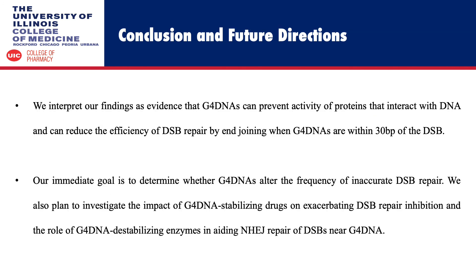We interpret our findings as evidence that G4 DNAs can prevent activity of proteins that interact with DNA and can reduce the efficiency of double strand break repair by end joining when G4 DNAs are within 30 base pairs of the double strand break. Our immediate goal is to determine whether G4 DNAs alter the frequency of inaccurate double strand break repair. We also plan to investigate the impact of G4 DNA-stabilizing drugs on exacerbating double strand break repair inhibition and the role of G4 DNA-destabilizing enzymes in aiding end joining repair of double strand breaks near G4 DNA.